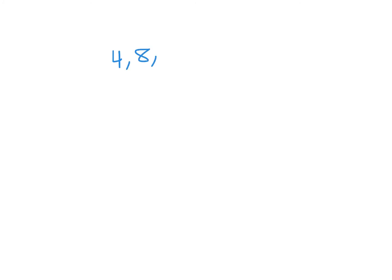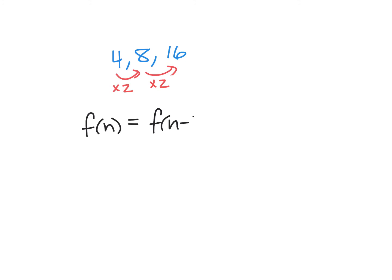For the sequence 4, 8, 16, you might initially think we're adding 4, but then the next step adds 8 — those don't match, so addition isn't the rule. Trying multiplication: 4 times 2 is 8, and 8 times 2 is 16 — that works. So F of N equals F of N minus 1 times 2, or a sub N equals 2 times a sub N minus 1. The placement of the 2 doesn't matter.